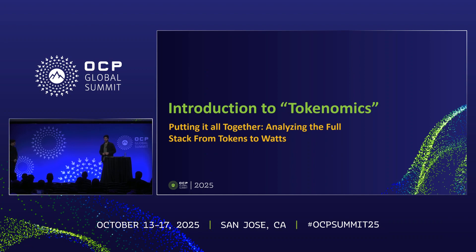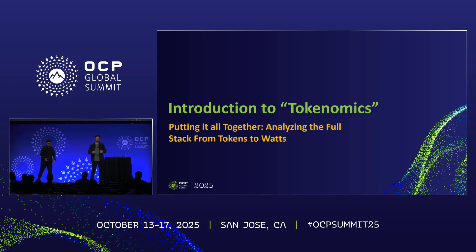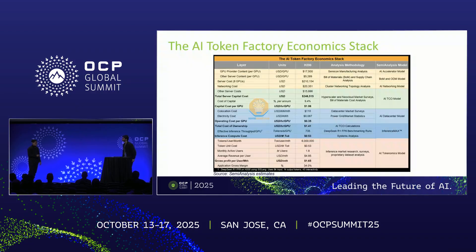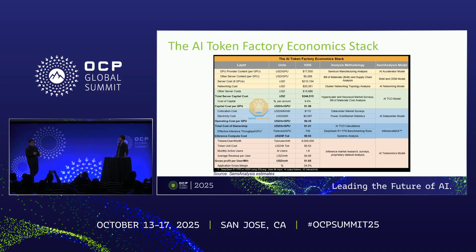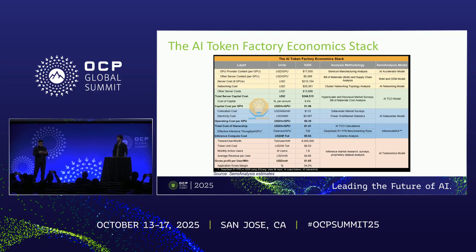Now handing it back to Dan to talk about tokenomics — how does this research actually influence what we publish? I'll complete the journey today. In this AI tokenomics stack, we'll see how everything Jordan talked about and what I talked about earlier connects all the dots. What we're going to do today is show you how to get from the chip cost and system cost all the way down to dollars per million tokens.